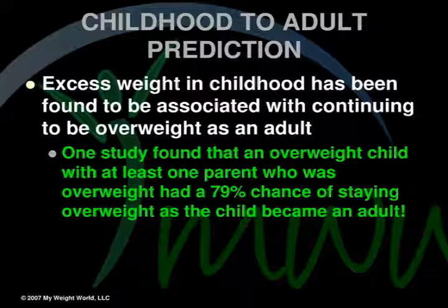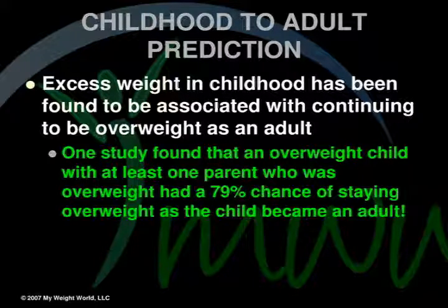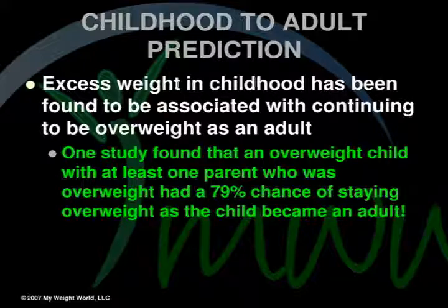Childhood to Adult Prediction: Excess weight in childhood has been found to be associated with continuing to be overweight as an adult. One study found that an overweight child with at least one overweight parent had a 79% chance of remaining overweight into adulthood.